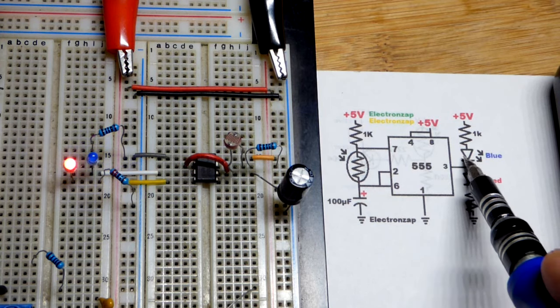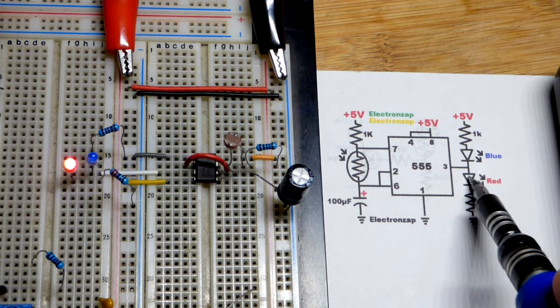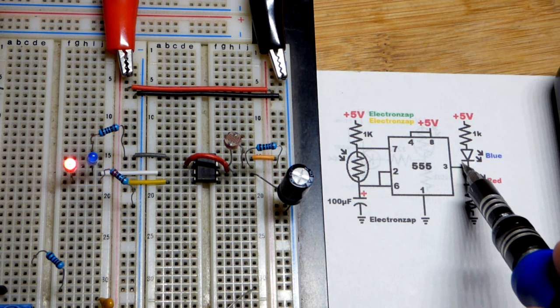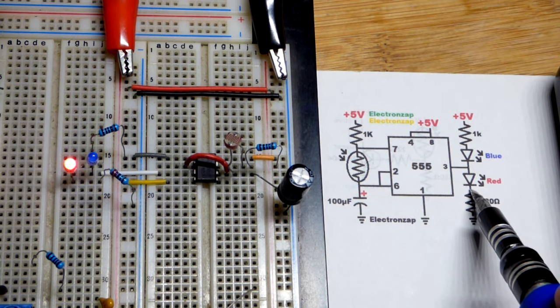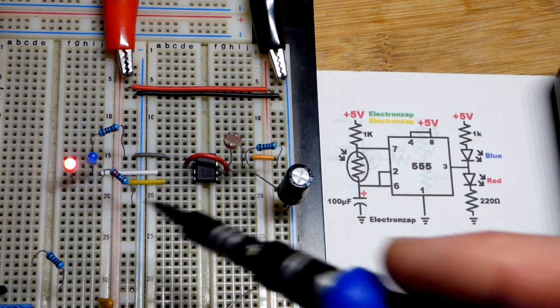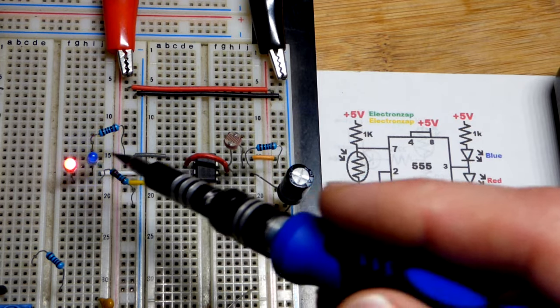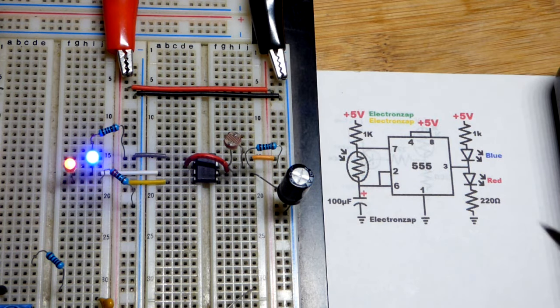And also, blue LEDs are naturally brighter than red LEDs. So we got 220 ohm to help get the red LED more current, so that it will be about as bright as the blue LED, hopefully, right there.